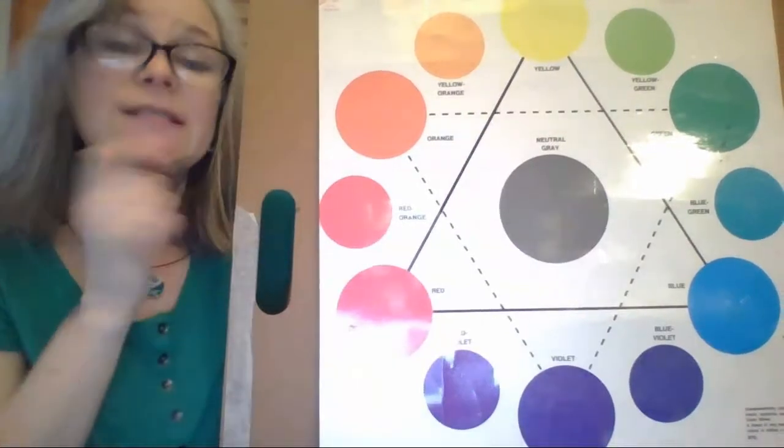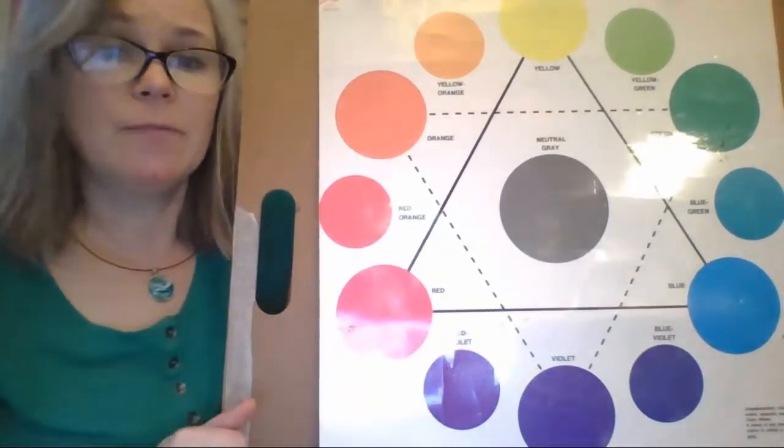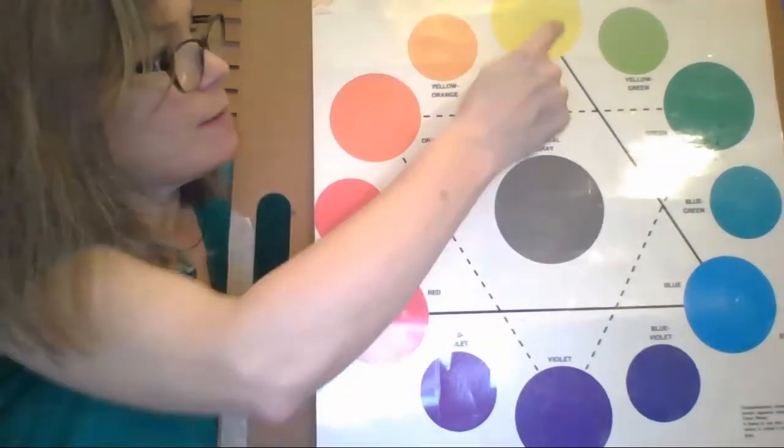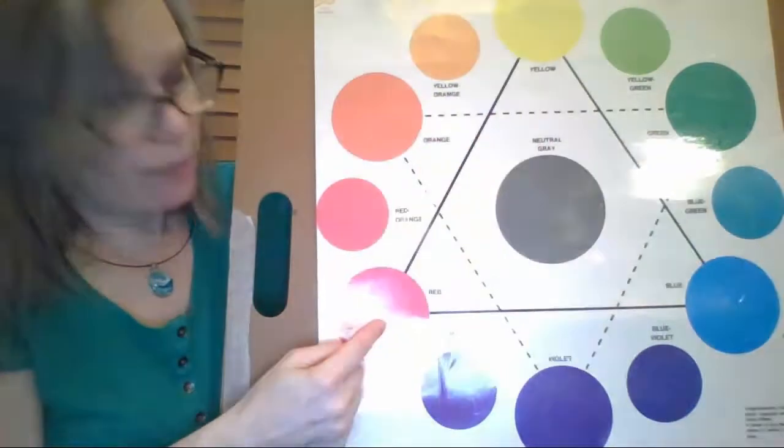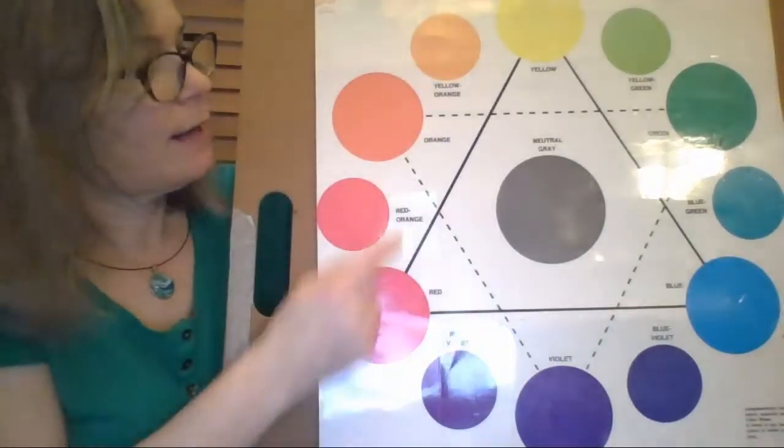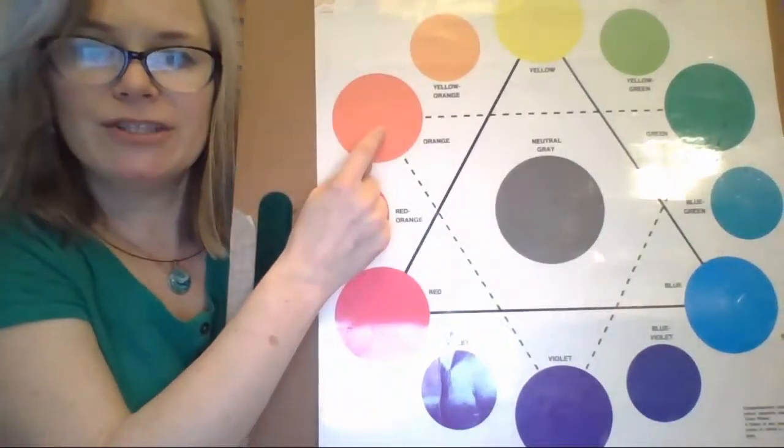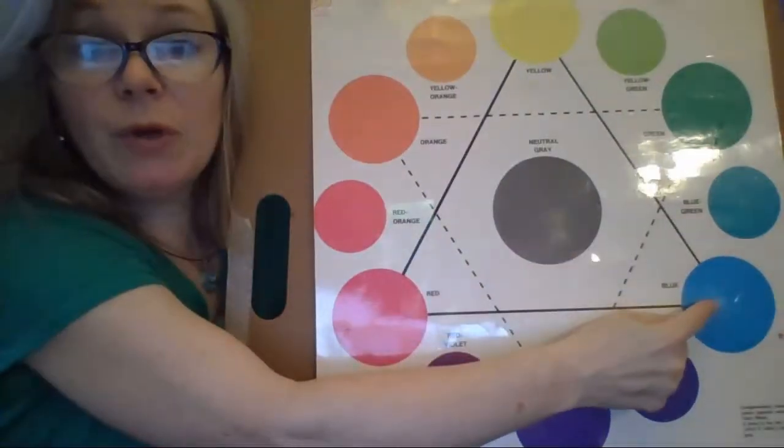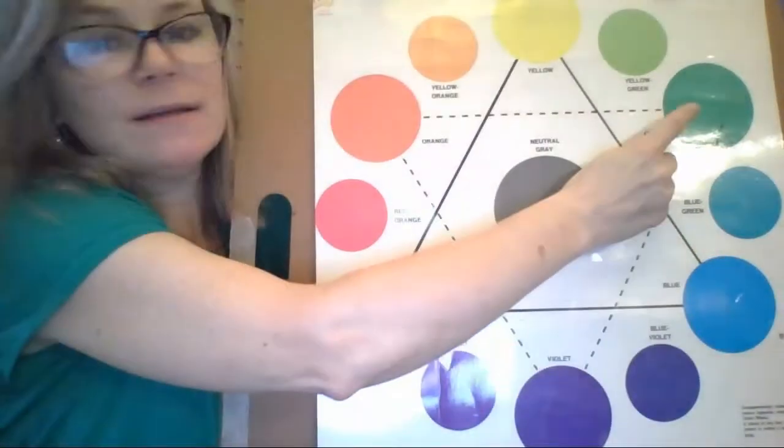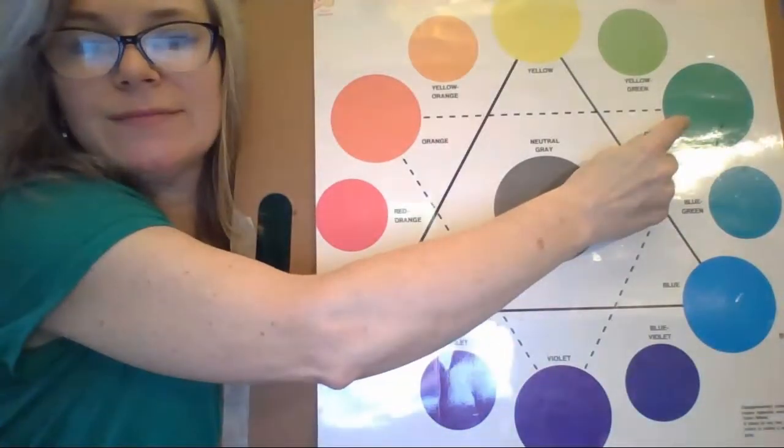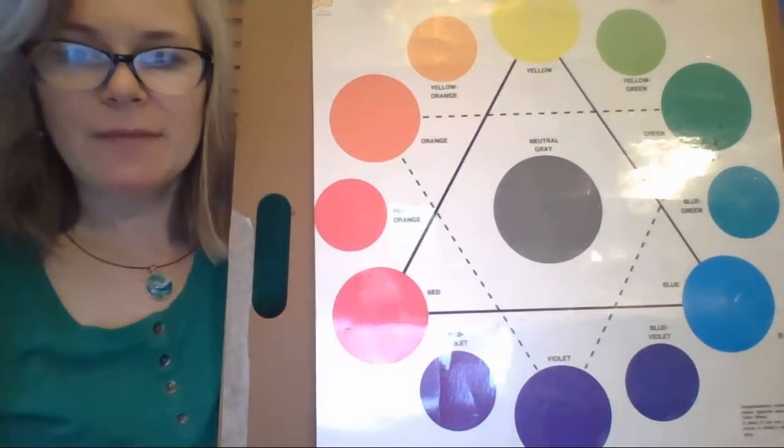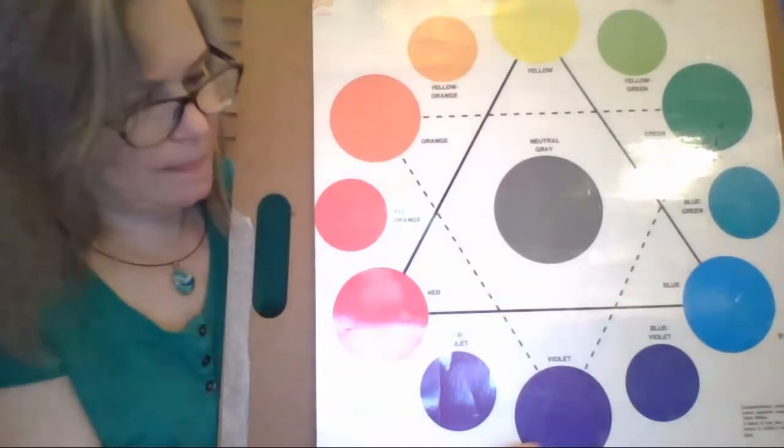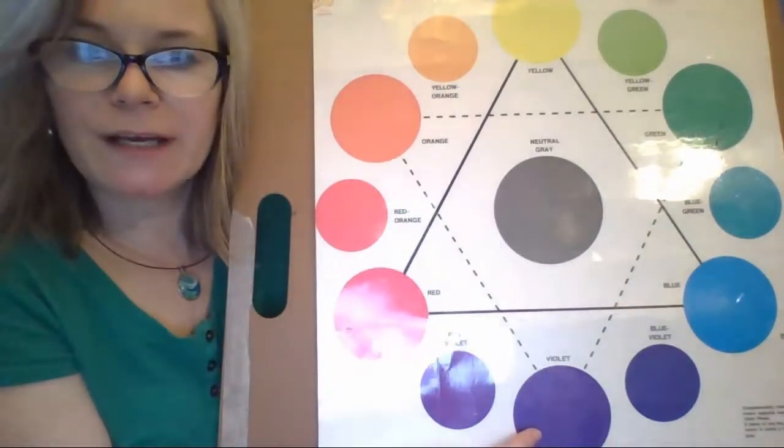Now the secondary colors can be made by mixing the primary colors. So if I mix yellow and red, I get orange. If I mix yellow and blue, I get green. And if I mix red and blue, I get that purple or violet color.